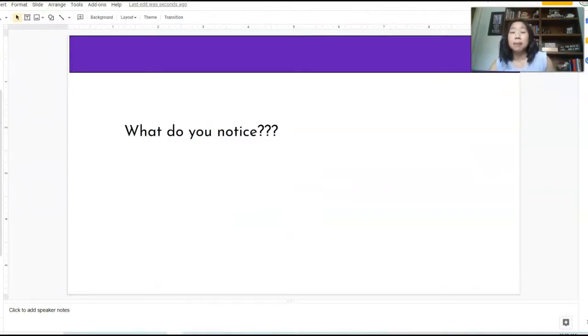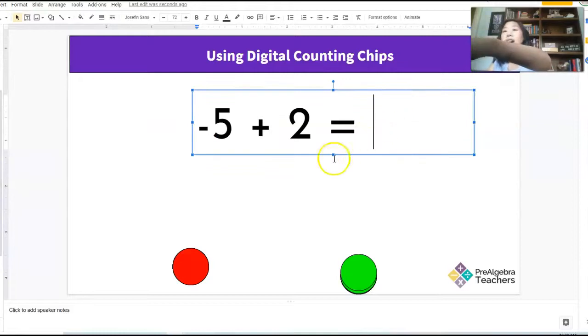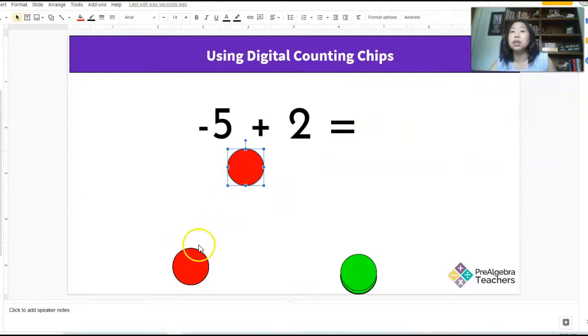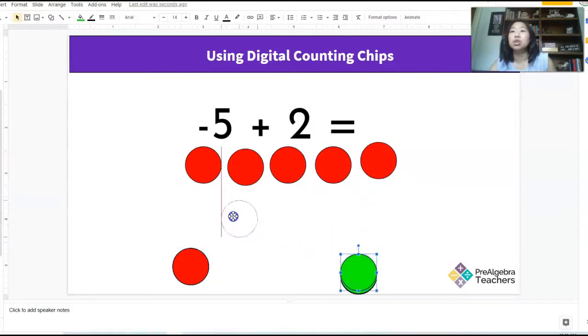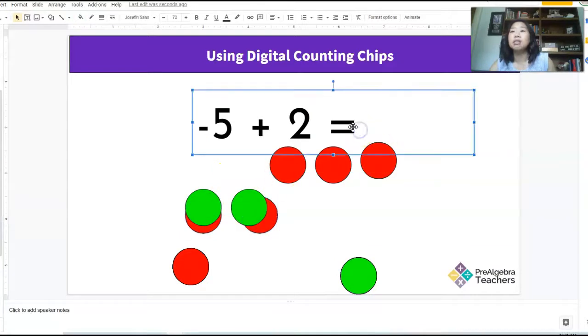At this point, my students already understand the concept of absolute value. So they understand that if you have the absolute value of an integer, that integer comes out positive. So we will talk about that very quickly, just as a reminder. And I'm going to do more examples. So I have five negatives here. One, two, three, four, five, plus two positives. Okay. So these zero out, and what do I have left? Three negatives.